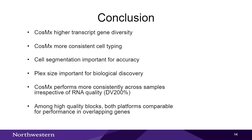In summary, CosMx showed higher transcript and gene diversity compared to Xenium across all samples, and more consistent cell typing and cell segmentation. Plex size is important both for annotation accuracy and discovery. CosMx performs more consistently across samples irrespective of RNA quality as measured by DV200 scores, while both platforms appear comparable in performance for higher-quality blocks when using overlapping genes.